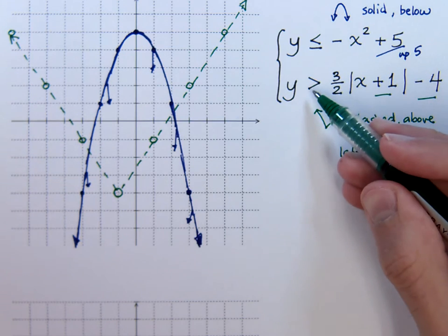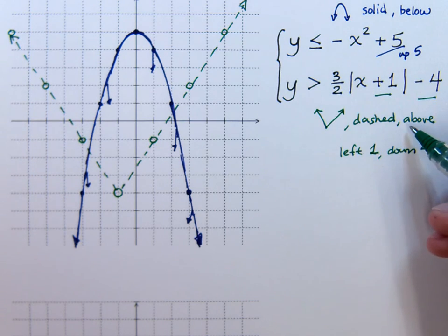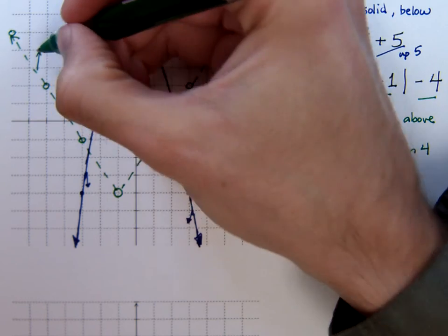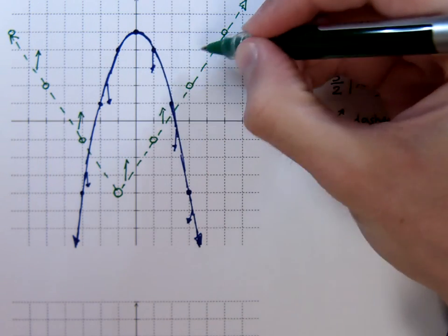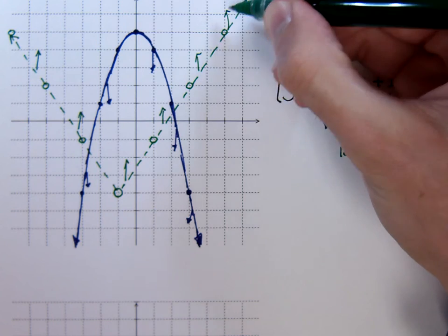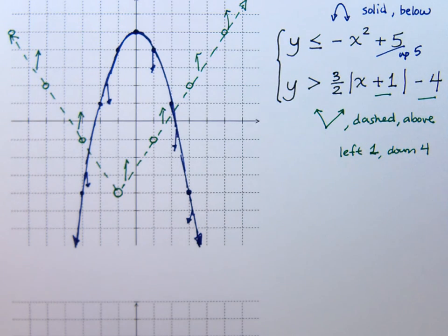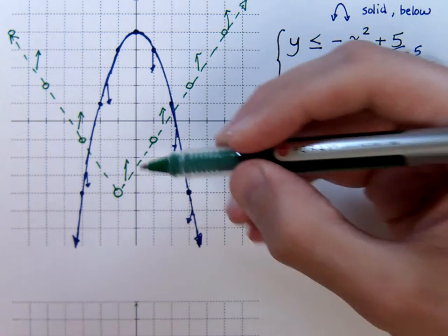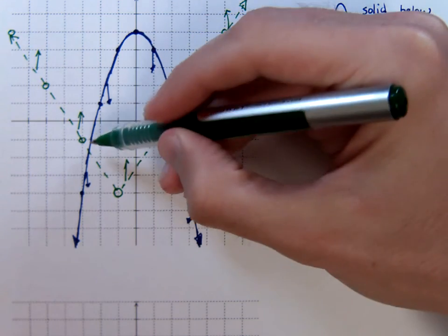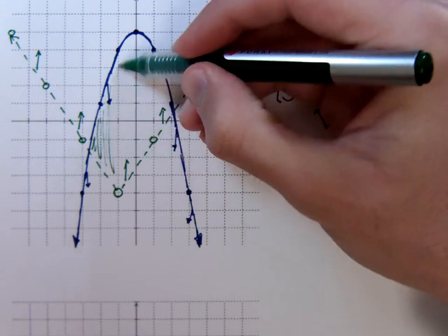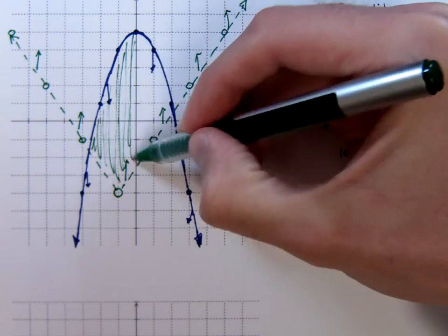And get it on the other side as well. Now, this says I need to shade above. Okay, so it's greater than. So I know I need to shade above here, so basically inside this V shape. So where do these guys intersect?